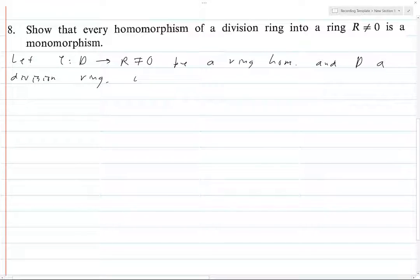We want to prove it's a monomorphism, i.e. an injective homomorphism. So let A be in D but not in 0.